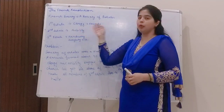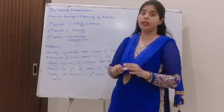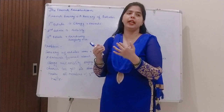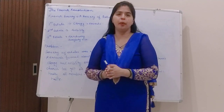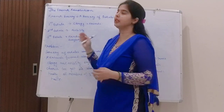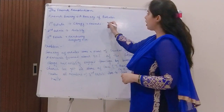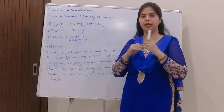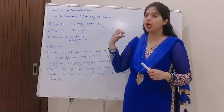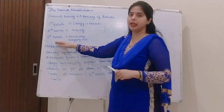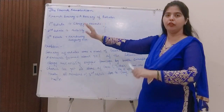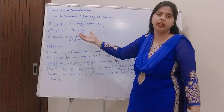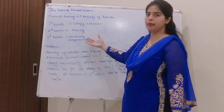The second estate is the nobility — those who were the leaders. The third estate consists of everyone who is not in the first or second estate — those not in the clergy or nobility fall into the third estate.